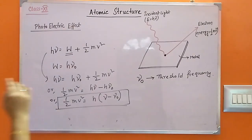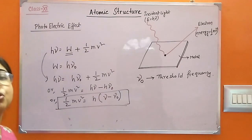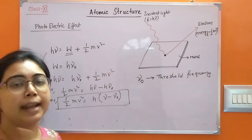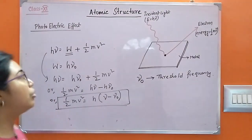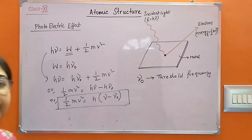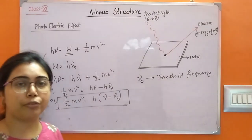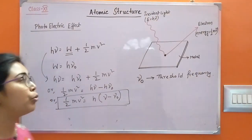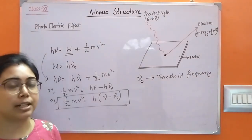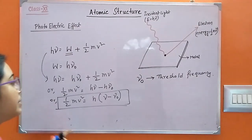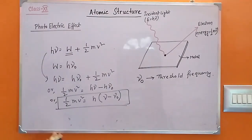From this discussion, it is concluded that light has two natures: wave nature and particle nature. From corpuscular theory, light is composed of a stream of particles, and from wave theory, light has a wave nature. So it is believed that light has a dual nature — that is, wave and particle nature.